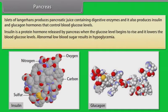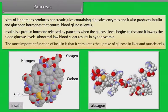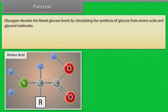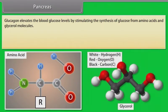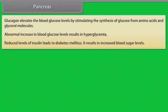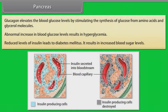Insulin is a protein hormone released by the pancreas when glucose levels begin to rise; it lowers blood glucose levels. Abnormally low blood sugar results in hypoglycemia. The most important function of insulin is that it stimulates the uptake of glucose in liver and muscle cells. Glucagon elevates blood glucose levels by stimulating the synthesis of glucose from amino acids and glycerol molecules. Abnormal increase in blood glucose levels results in hyperglycemia. Reduced levels of insulin lead to diabetes mellitus, resulting in increased blood sugar levels.